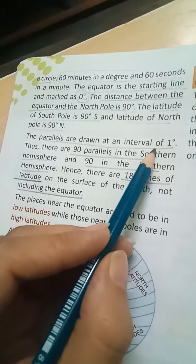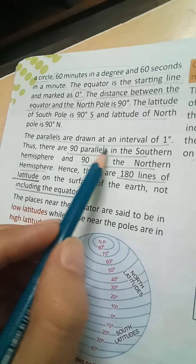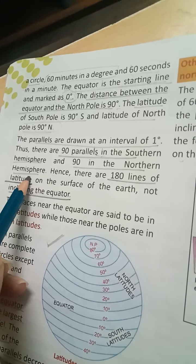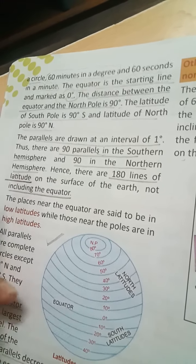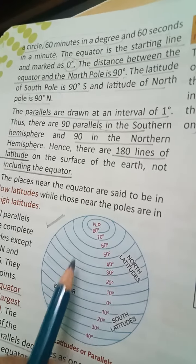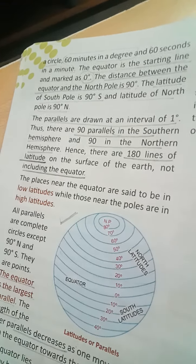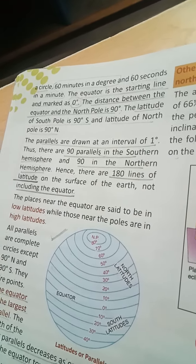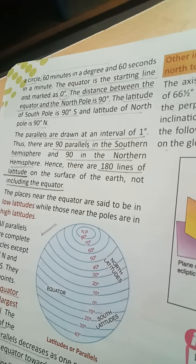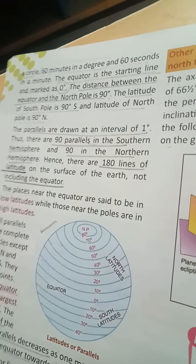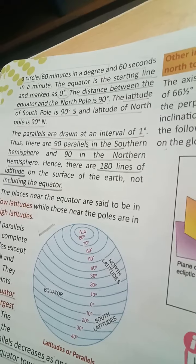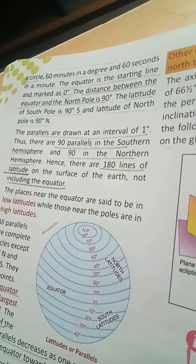The parallels are drawn at intervals of 1 degree. Thus there are 90 parallels in the southern hemisphere and 90 in the northern hemisphere. That makes 180 lines of latitude on the surface of the Earth, not including the equator.